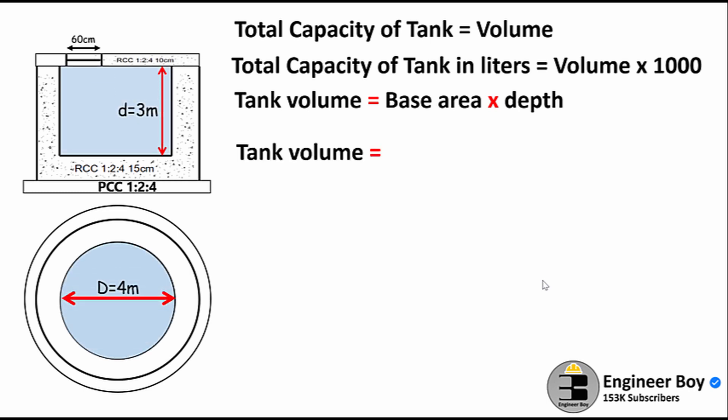So the tank volume equals area of the base, which is πD²/4, and that's given in the 2D plan where D equals 4 meters. So πD²/4 times the depth d. Tank volume equals πD² where D equals 4 meters - that's just the diameter of this circular water tank.